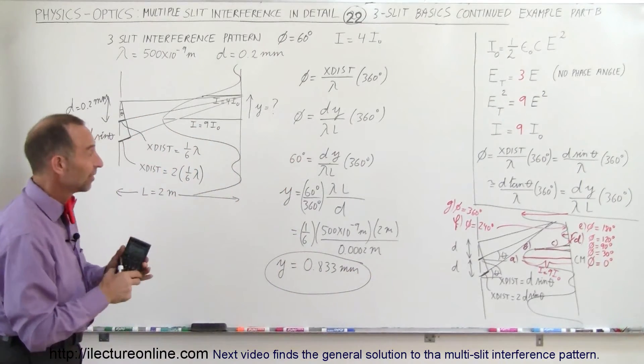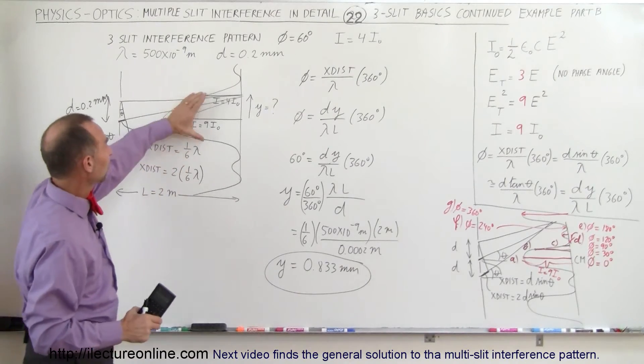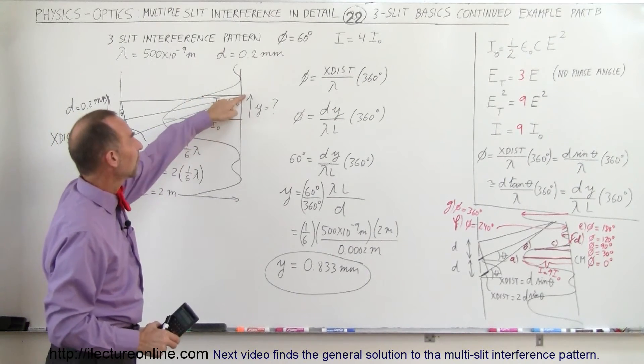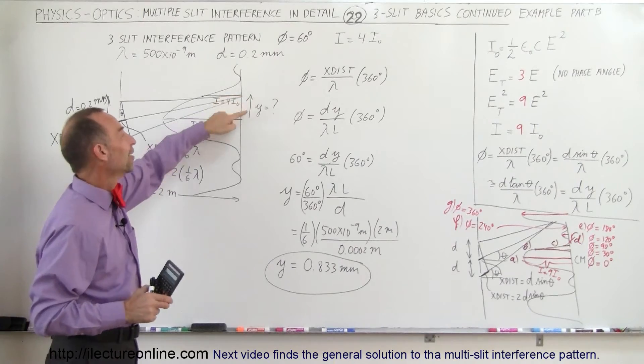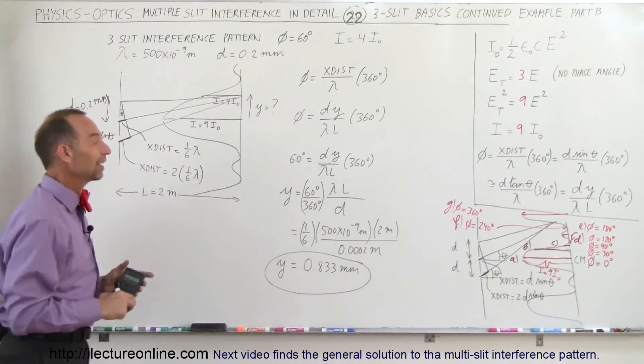0.833 millimeters, so almost 1 millimeter away from the central maximum. So you can see that these are very small, thin central maximums, but we realize that we're almost 1 millimeter away from the center, and that's how we find that.